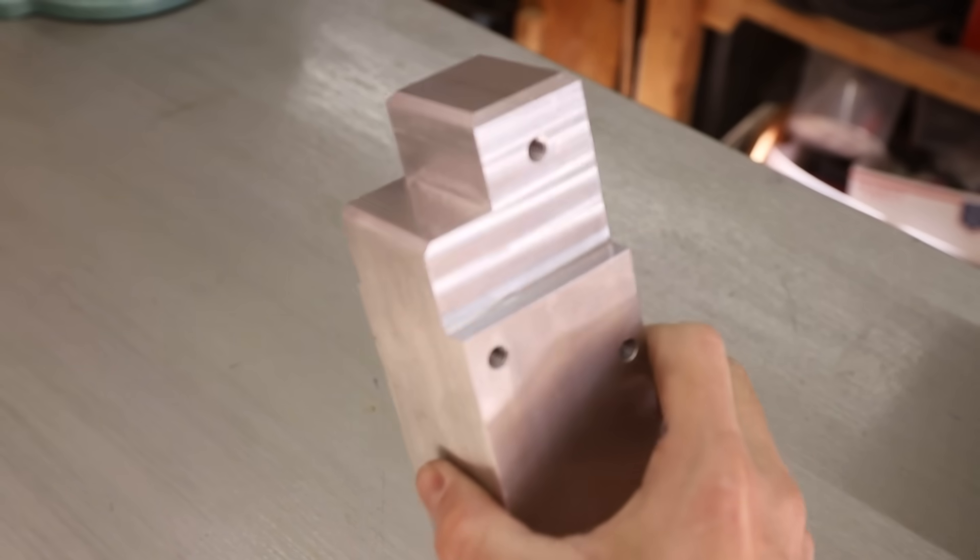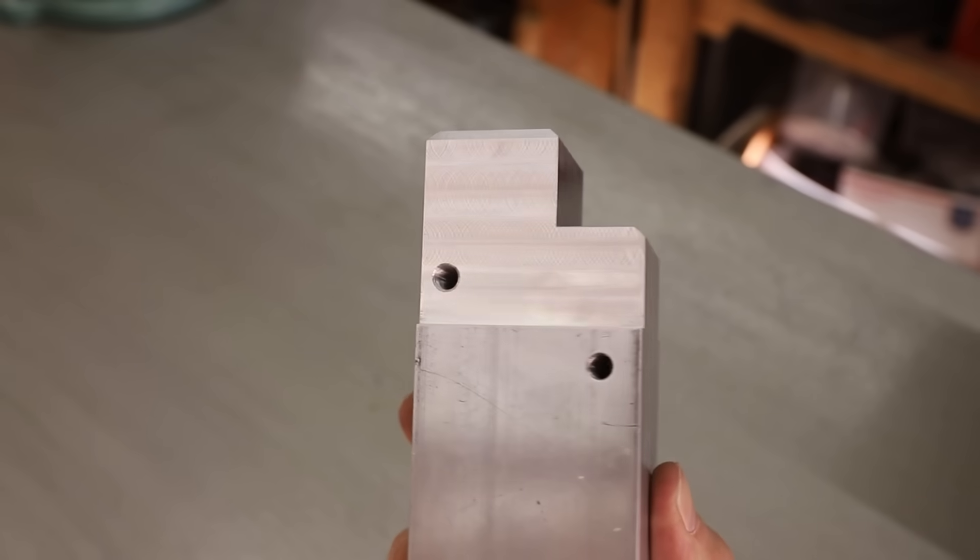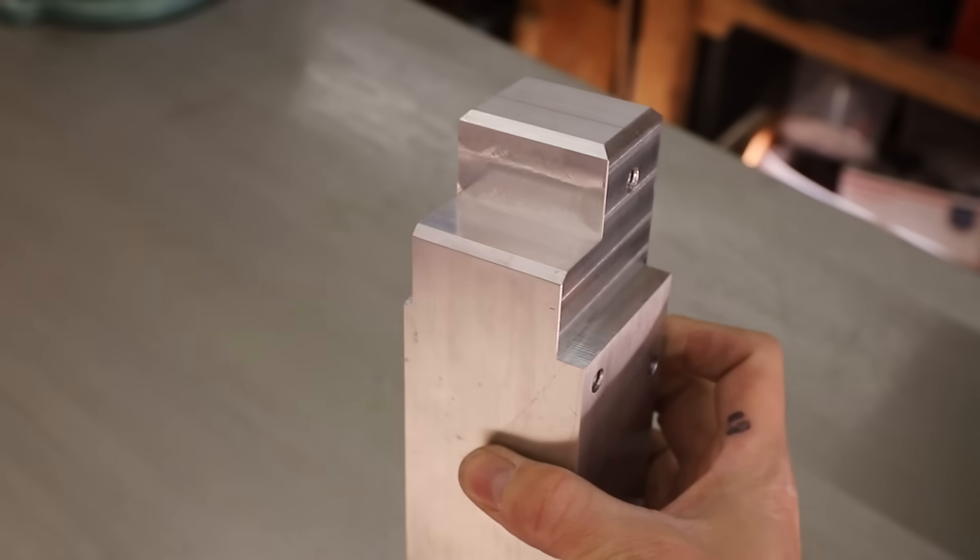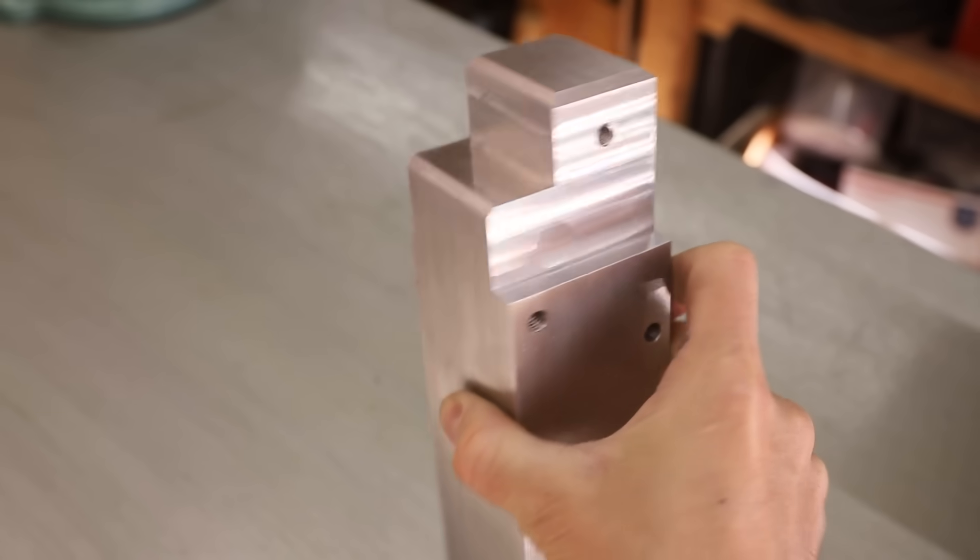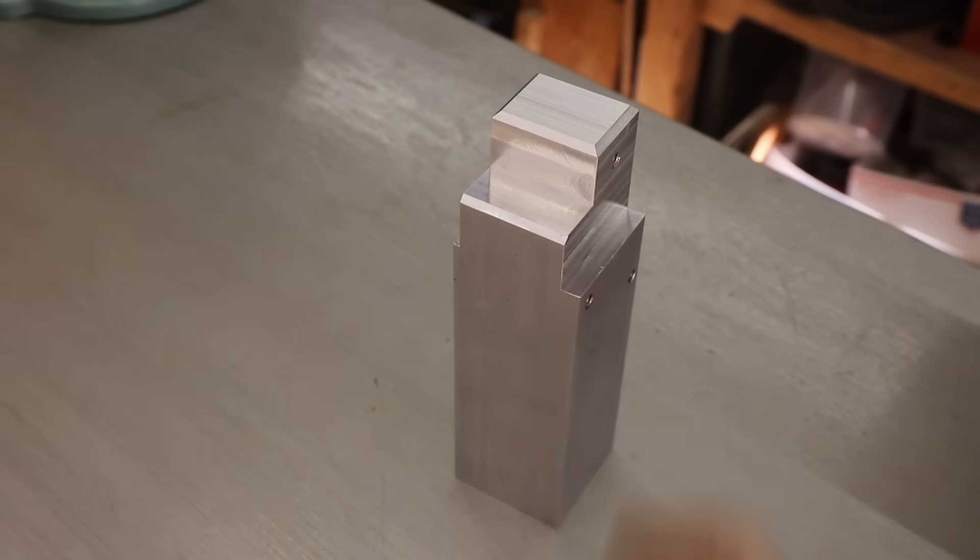I had this piece of aluminum kicking around my shop for a few years, so I decided to finally use it. I drilled and tapped a couple mounting holes, and then milled out some parts to give the hinges some clearance. I also had to make some spacers, which I made out of brass.